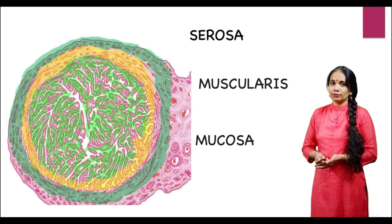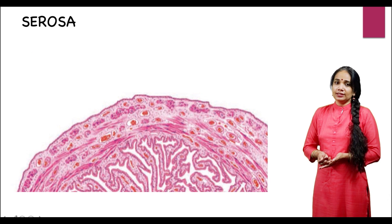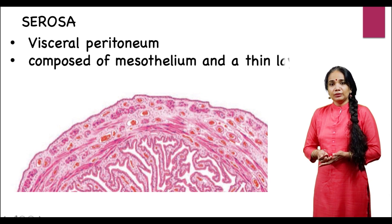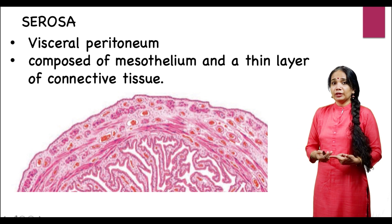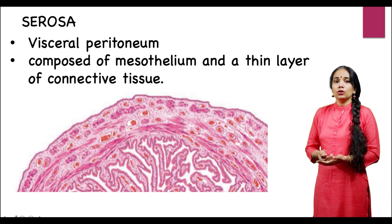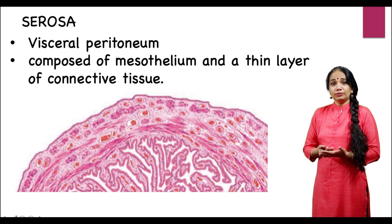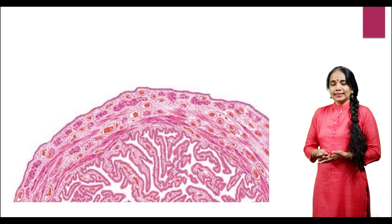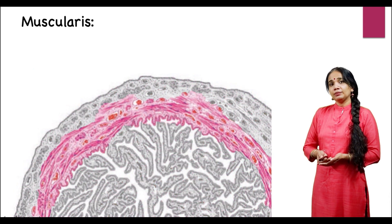The serosa is basically visceral peritoneum — it has become part of the mesosalpinx. Like peritoneum, it is composed of mesothelium and a thin layer of connective tissue. That is your serosa. The next layer on the inside is your muscularis.